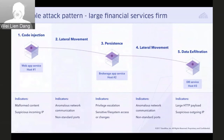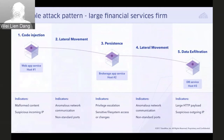After compromising the web app container, the attacker moves laterally east-west within the environment, identified based on anomalous network communication or use of non-standard ports. Once the attacker lands on a container that is part of an internal brokerage app service, he starts to establish persistence — embedding himself in the environment. Indicators attributed to this behavior include privilege escalation or sensitive file system access or changes.